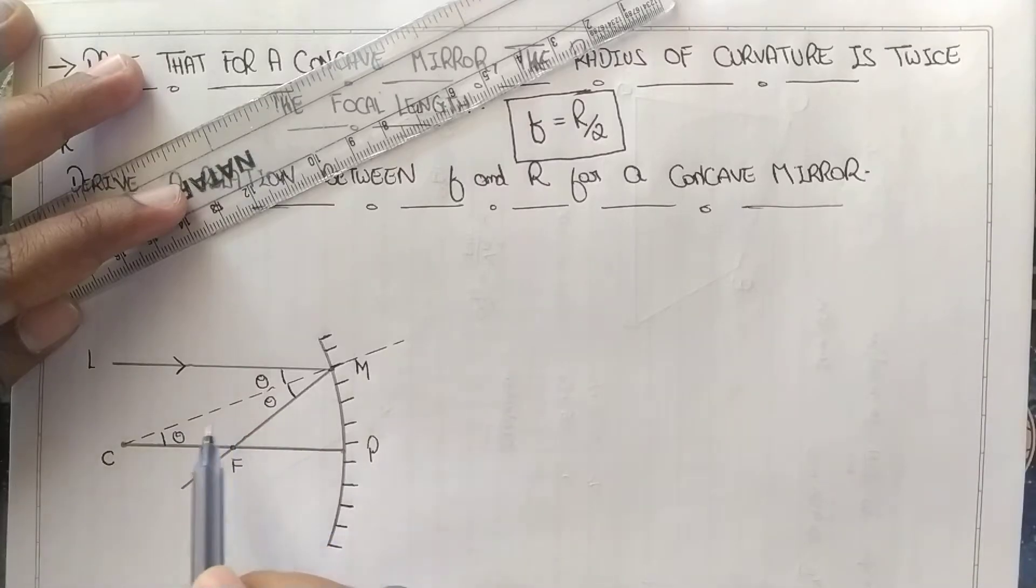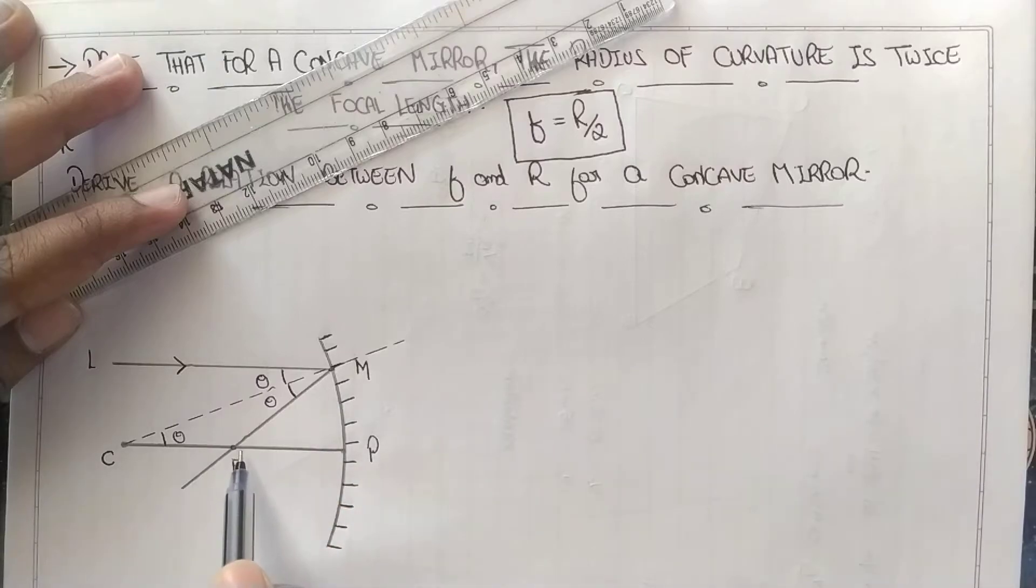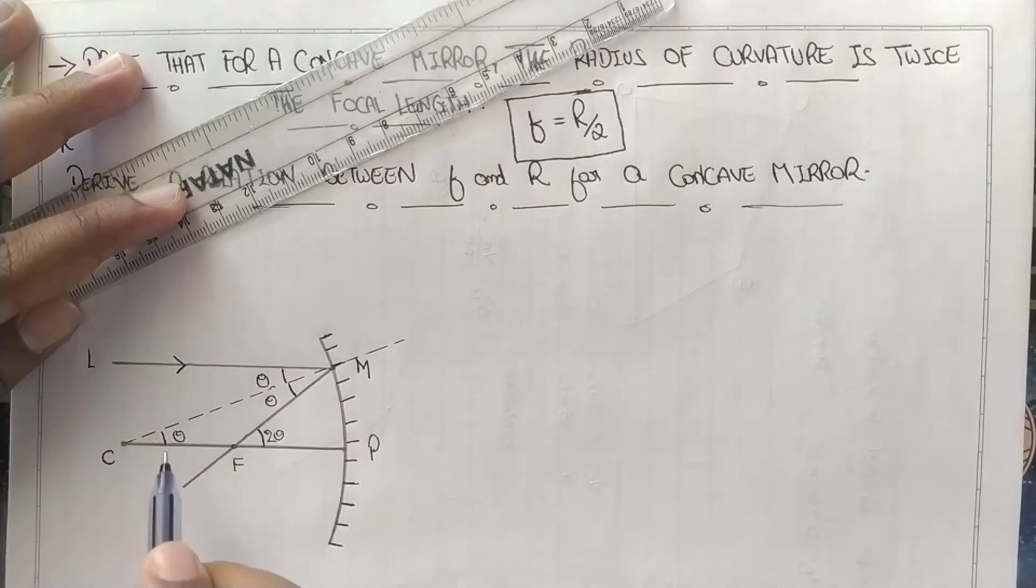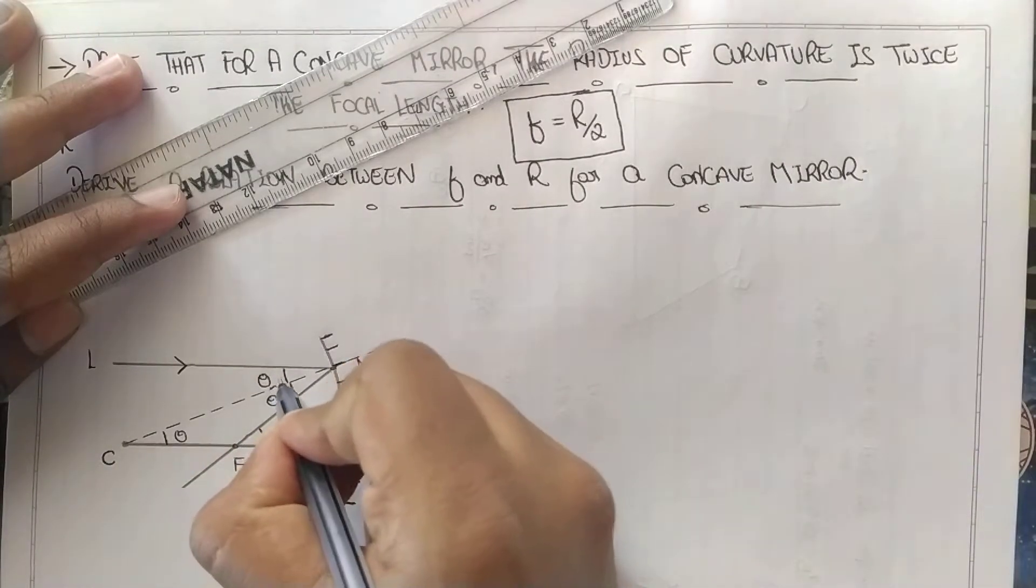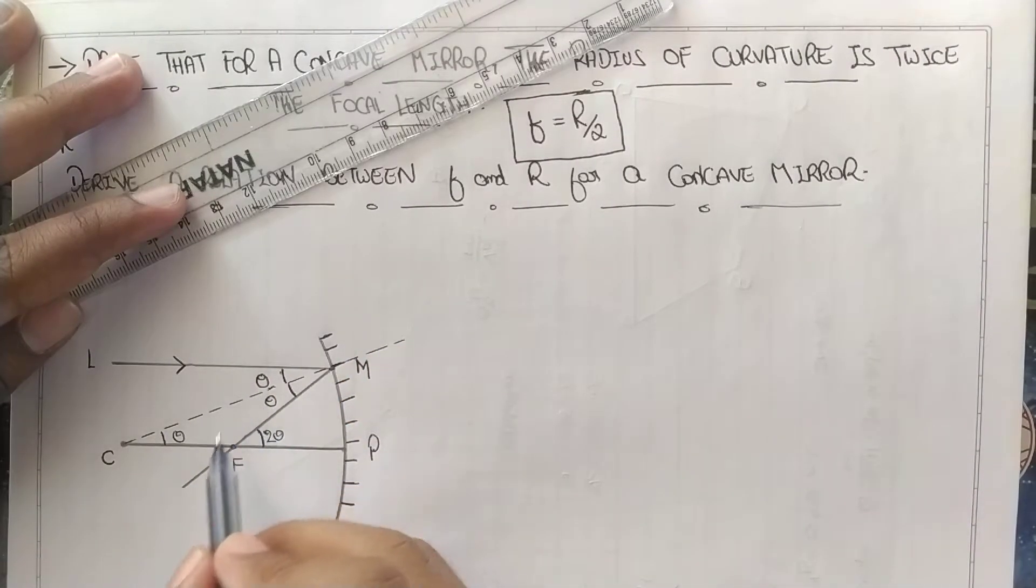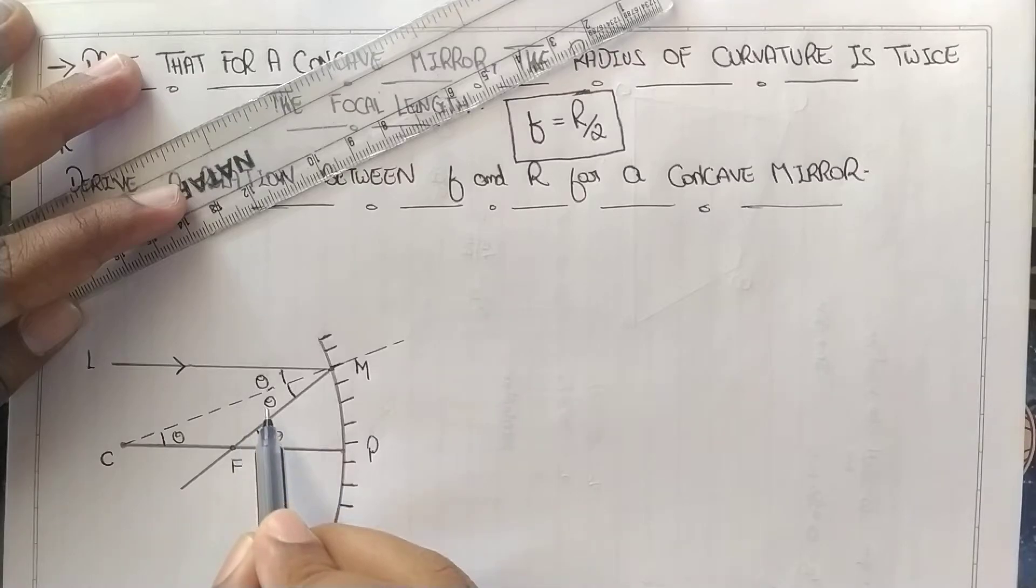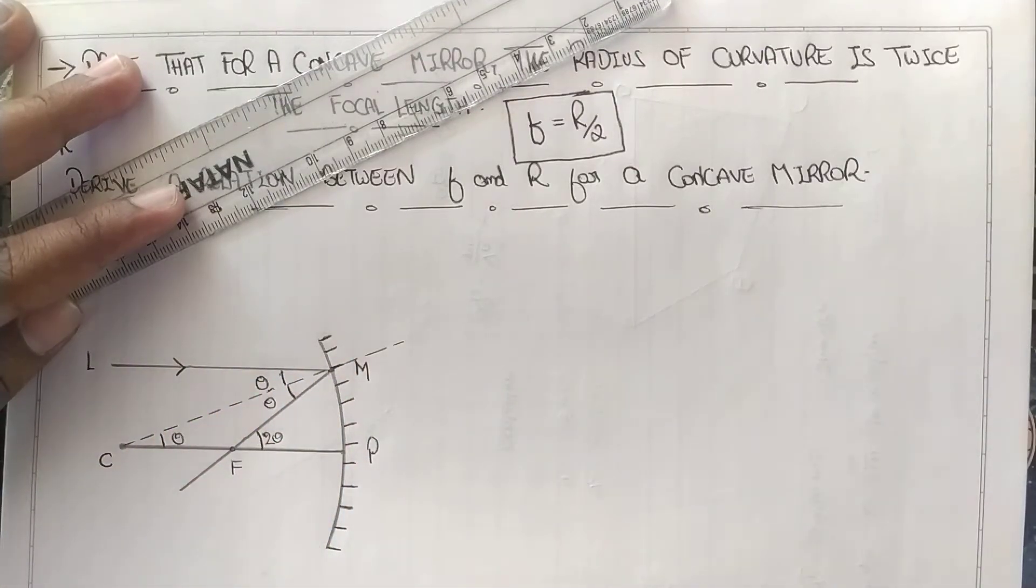From the same concepts of alternate angles, LMF is two theta, so MFP is also two theta. We constructed CM as the normal to identify these angles. This is theta and this is theta, and because of alternate angles, MCP is theta. Now LMF is two theta, so MFP is also two theta.